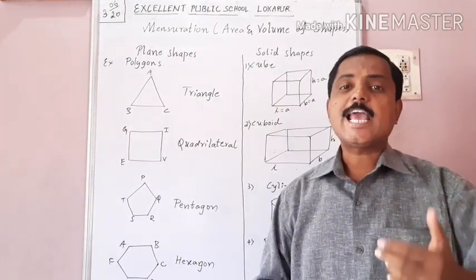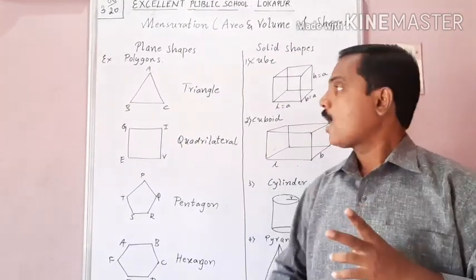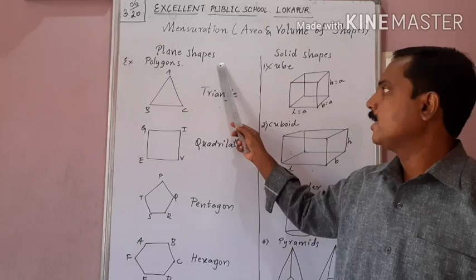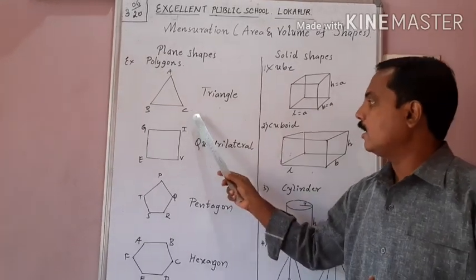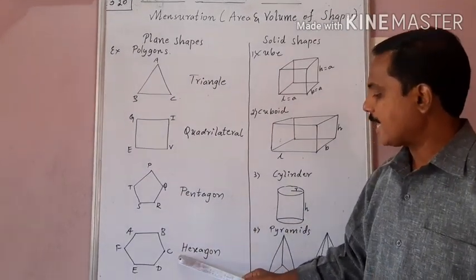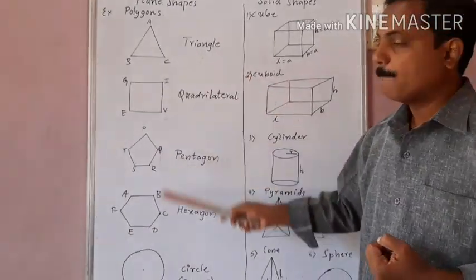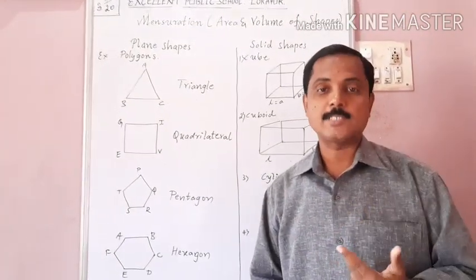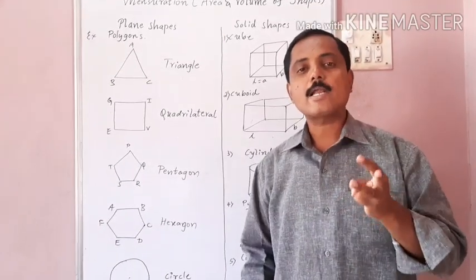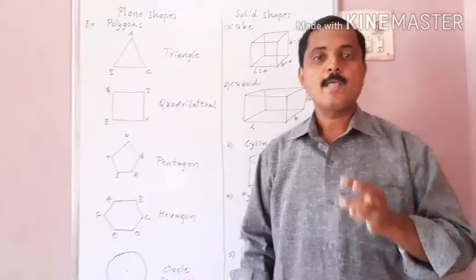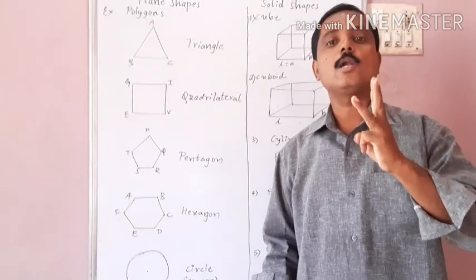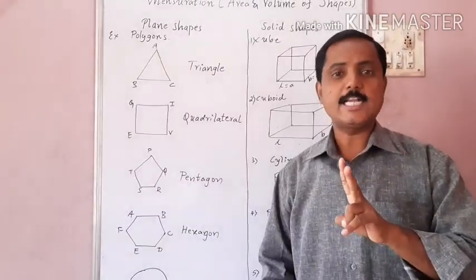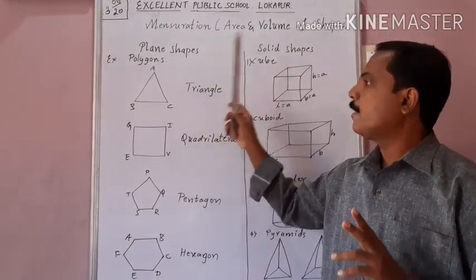The shapes which have only two dimensions are called 2D shapes. 2D shapes are also called plane shapes. Examples are triangle, quadrilateral, pentagon, hexagon, and circle. They will not have all three basic dimensions — out of three, they will have only two dimensions such as length and breadth, or breadth and height, or height and length. That is why these are called 2D shapes or plane shapes.